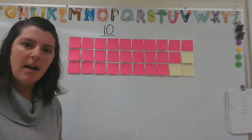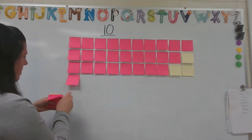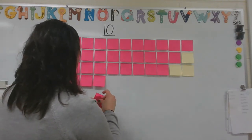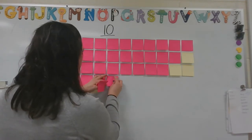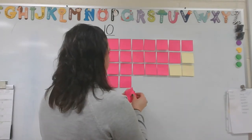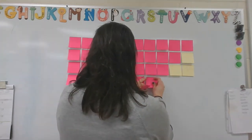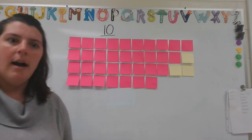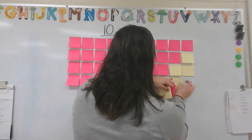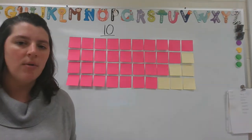But guess what? There was still another way that someone showed this. They had 1, 2, 3, 4, 5, 6, 7 pink sticky notes. And then the rest were yellow. There was 1, 2, 3. Are you starting to notice anything about how these sticky notes look?